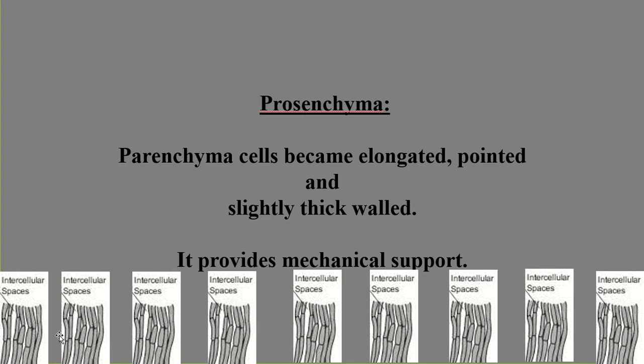Prosenchyma consists of parenchyma cells that have become elongated, pointed, and slightly thick-walled. Prosenchyma offers mechanical support to the plant. In the picture you can find prosenchyma cells which are elongated and pointed. This concludes the overview of parenchyma and its types.